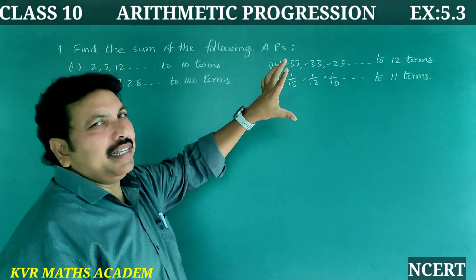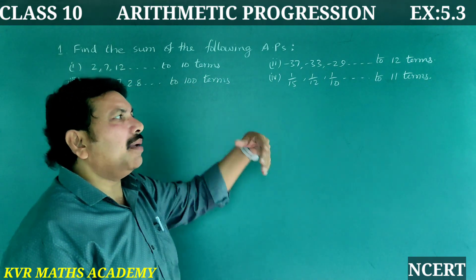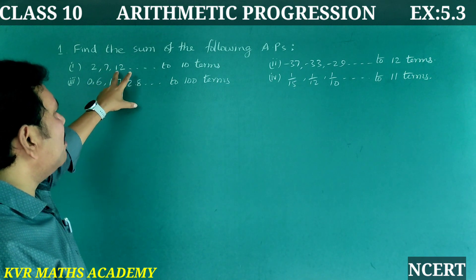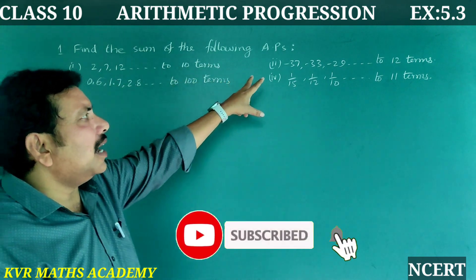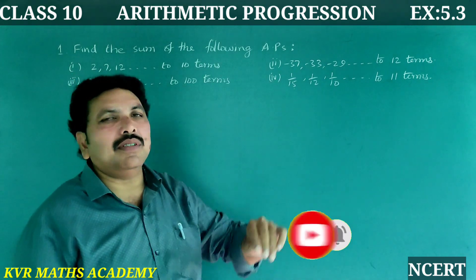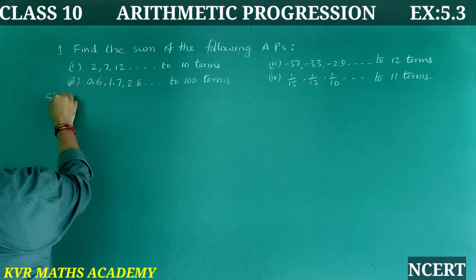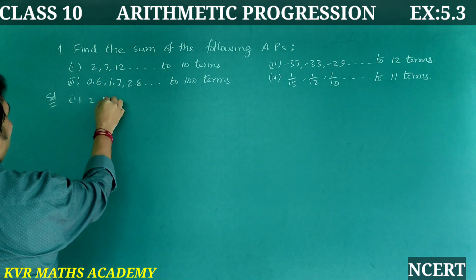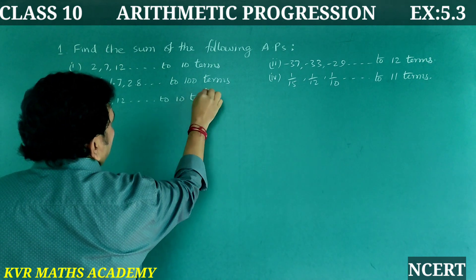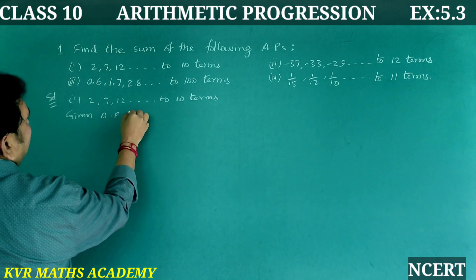Find the sum of the following APs. There are four problems total. Let's do them one by one. The first AP is 2, 7, 12, and so on up to 10 terms.